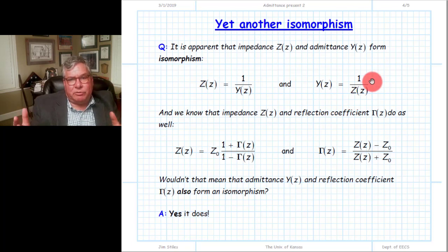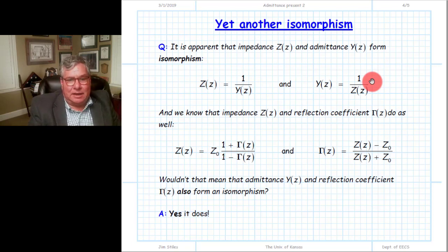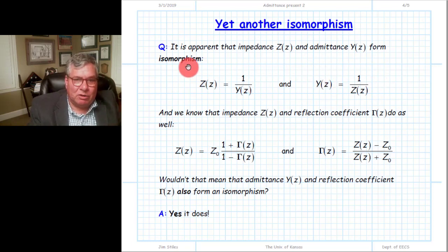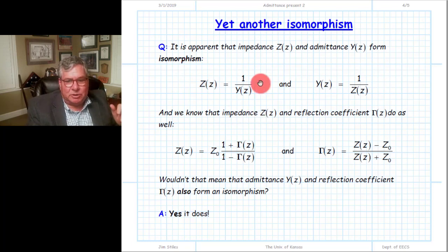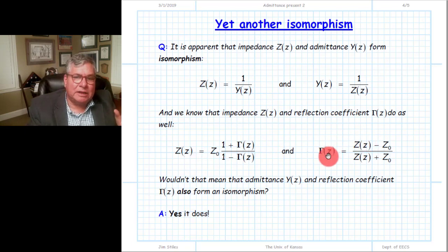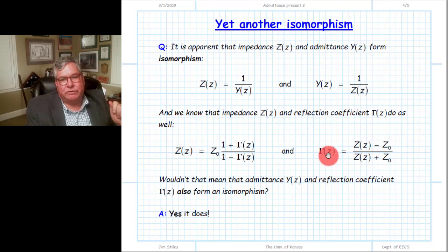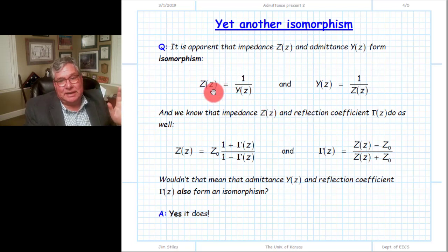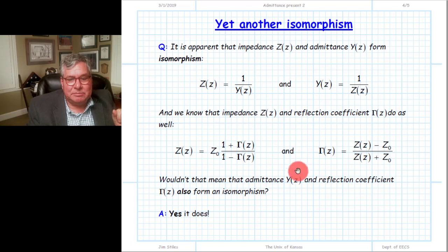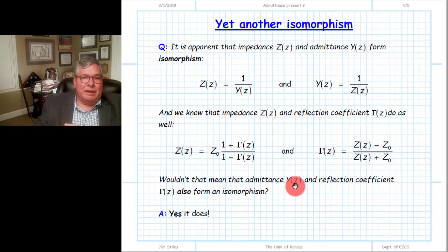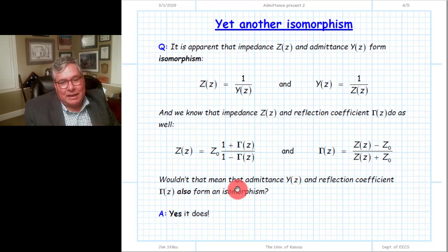There is a direct mapping — a direct relationship — between the line impedance function and the line admittance function y. Given one, we know the other. Mathematically we call this a mapping or isomorphism. We also know there is a similar isomorphism between the reflection coefficient and the line impedance function. So, if there is a relationship between gamma and line impedance z, and a relationship between line impedance z and line admittance, it follows that there should likewise be a direct isomorphism between the line admittance function and the reflection coefficient function.